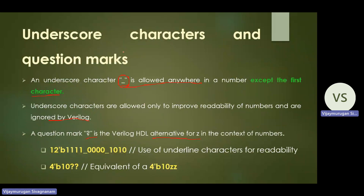For example, '12'b41_40s_1010' — the underscore separates the MSB 4 bits, middle 4 bits, and LSB 4 bits so the user can easily read the number. Another example: '4'b10??' — the question marks represent 'z', so this is equivalent to '4'b10zz', meaning the last two bits are high impedance.